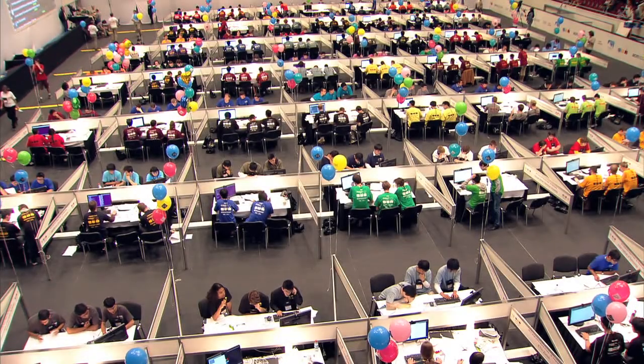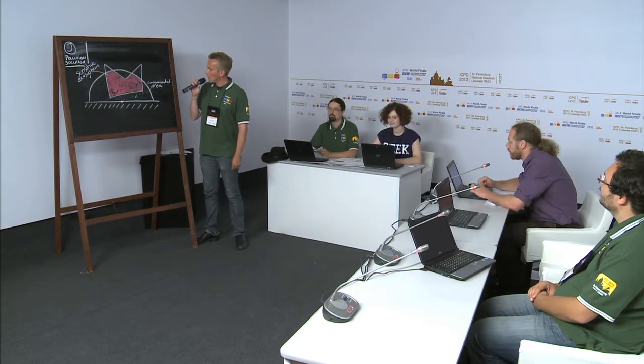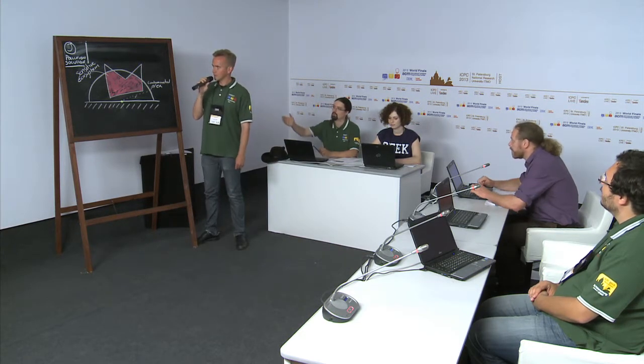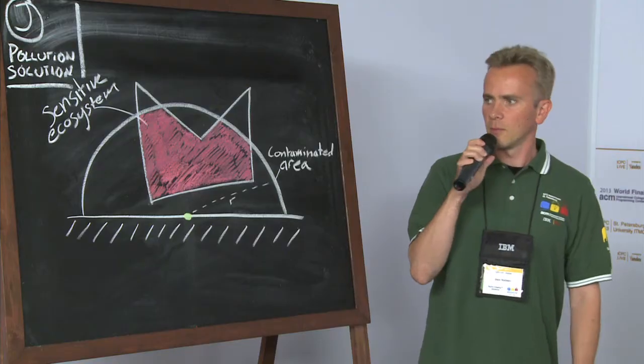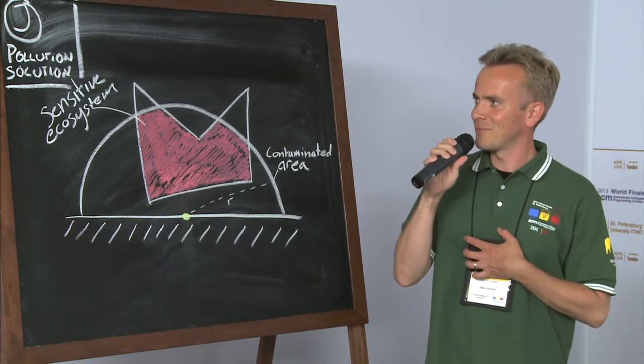Problem J is called Pollution Solution. I honestly don't know what the color of the balloon is, but I'm pretty sure someone will hear this and find out while I'm explaining. It is pink. Which is why you selected that color on the screen, obviously. Let's pretend so.